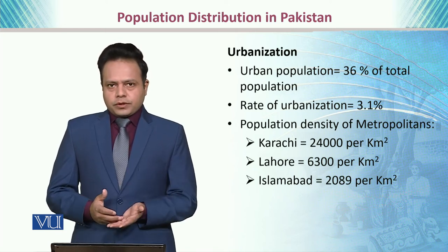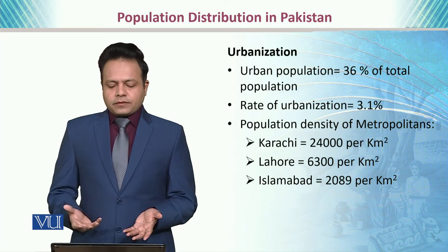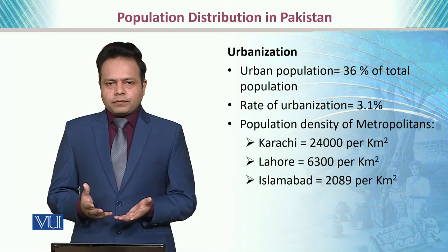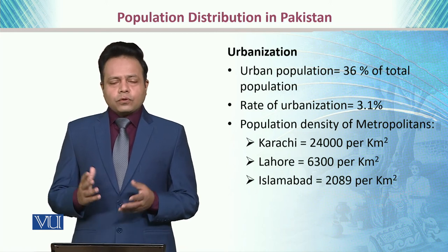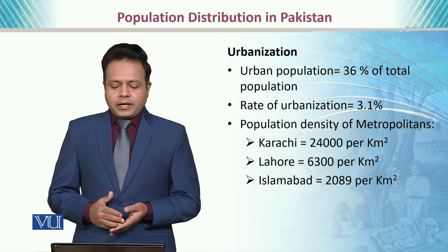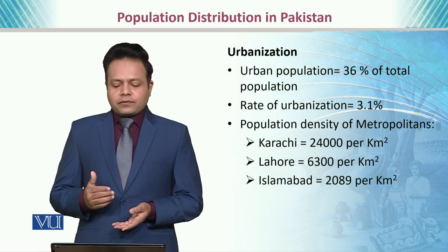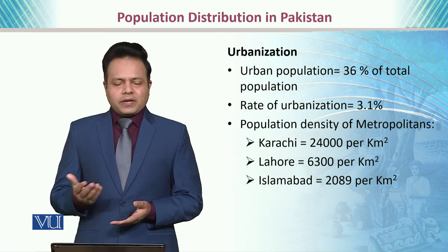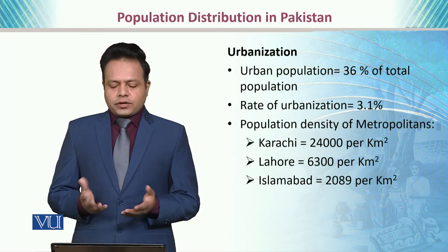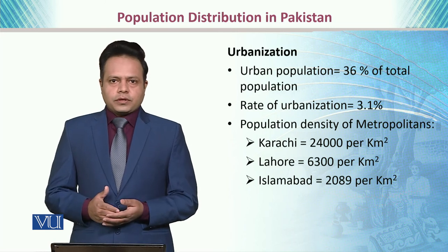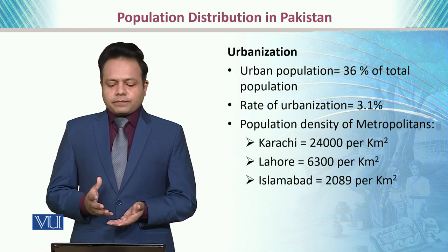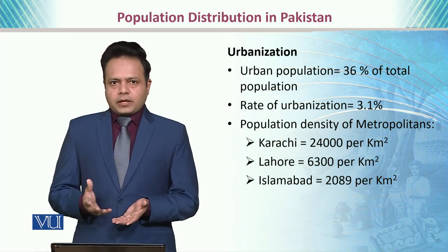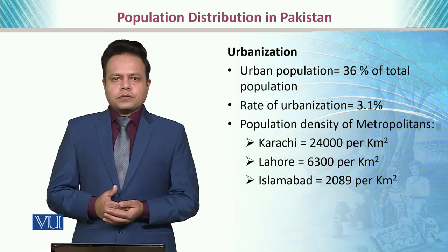The population density of major cities is as follows: Karachi is the most densely populated area at 24,000 inhabitants per square kilometer. In comparison, Lahore has 6,300 inhabitants per square kilometer, whereas Islamabad has 2,089 inhabitants per square kilometer. Karachi thus has a largely dense population as compared to the other two major cities of Pakistan.